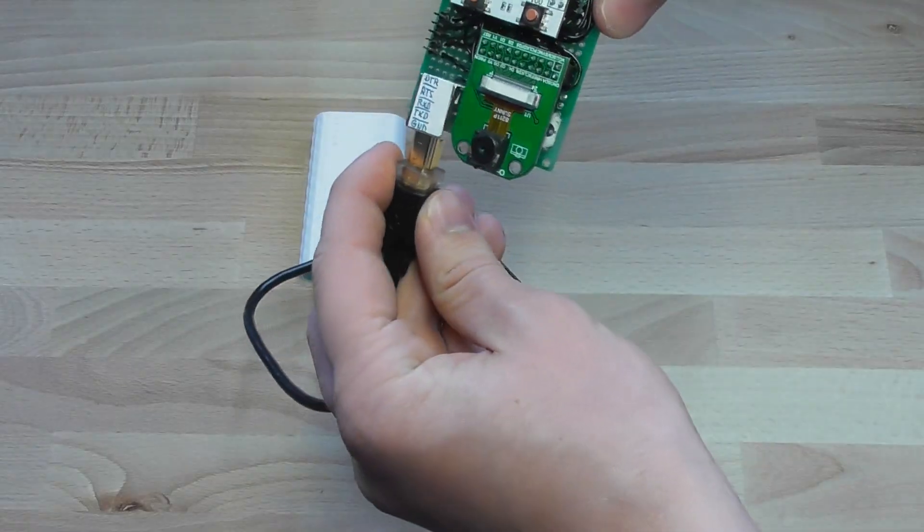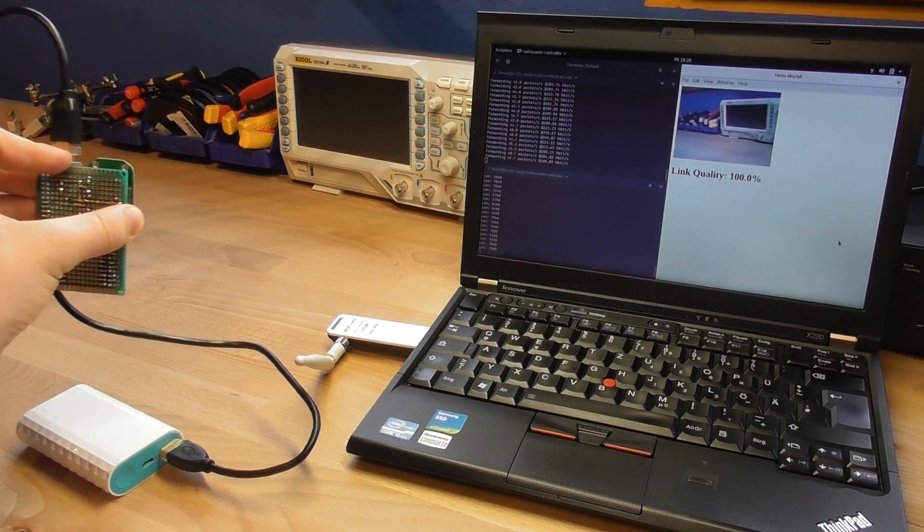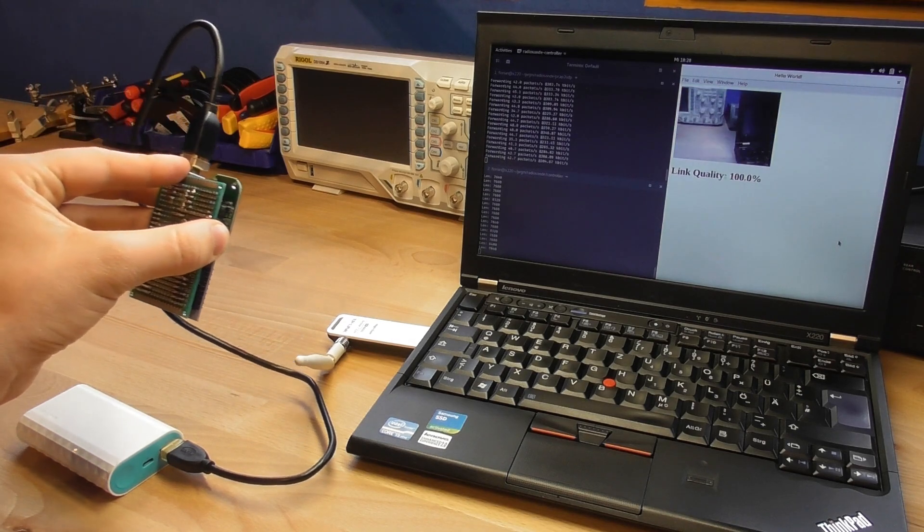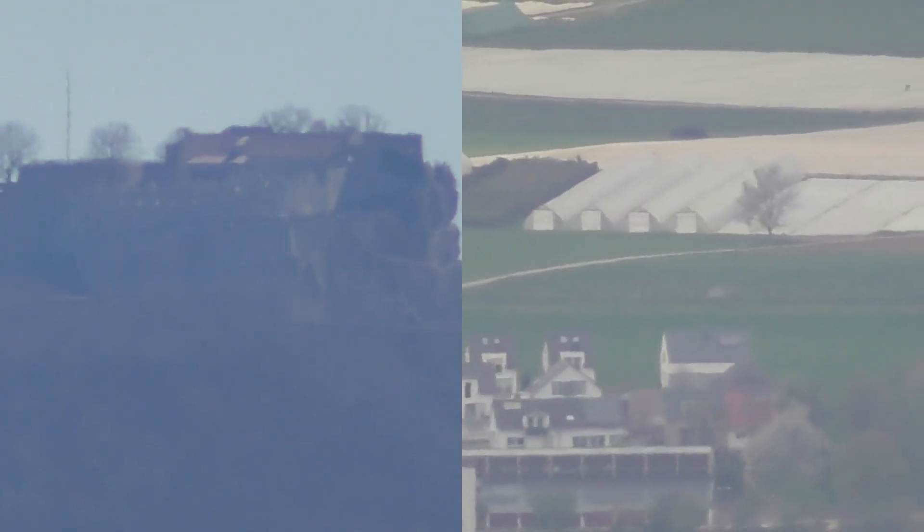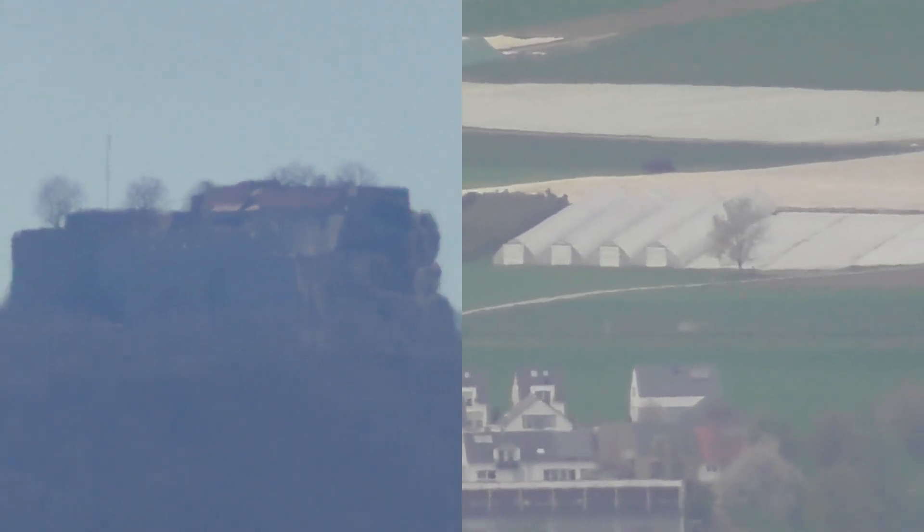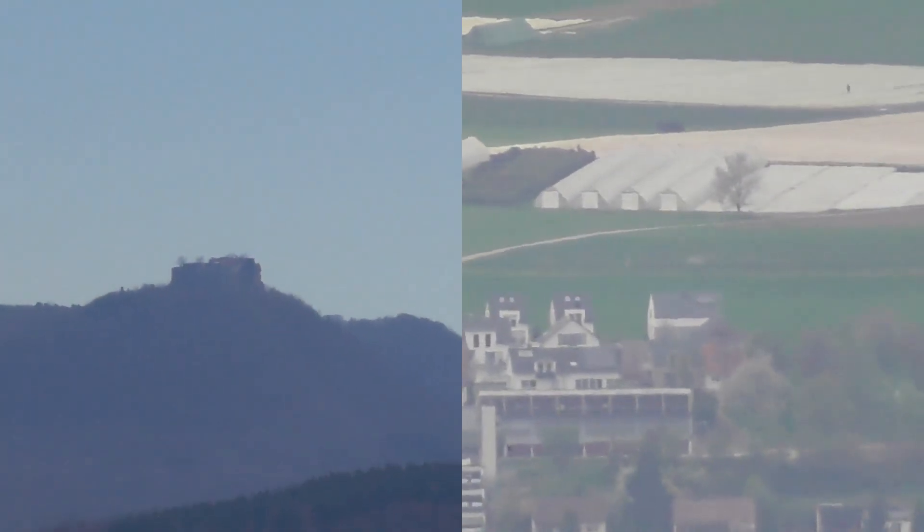In the lab, this setup can transmit live pictures. I was wondering if this could also work over a distance of 10 km and what kind of antenna I would need for that.